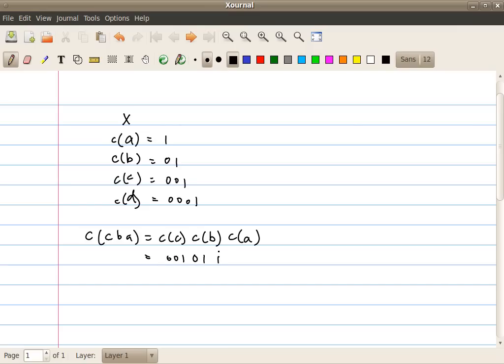So, in this sense, we say this code actually is instantaneous, because from the perspective of the decoder, when the decoder reads the first three bits, it can immediately know that the first symbol is c and cannot be anything else. And that's what we mean by the code is instantaneous.